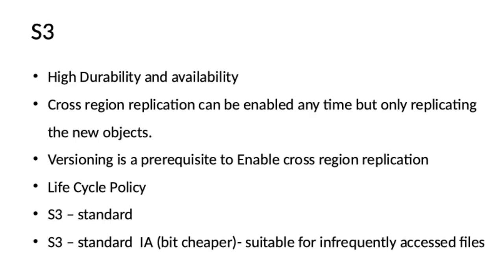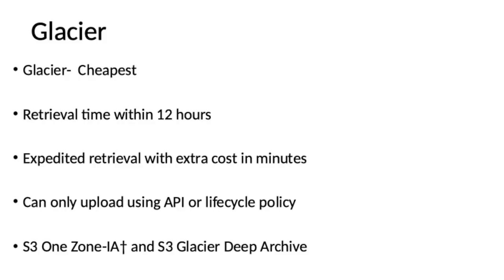There will be at least two questions in the exam based on lifecycle policy. To answer these questions, you will need to know the differences between S3 Standard, S3 Standard Infrequent Access, and S3 Glacier. S3 Standard is for general purpose storage for frequently accessed data. On the other hand, S3 Standard IA is suitable for infrequently accessed files but requires rapid access when needed. It is cheaper than S3 Standard. Amazon Glacier is the cheapest storage option and it is used for archiving data for seven to ten years or longer to meet regulatory compliance or requirements for some organizations.